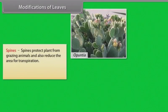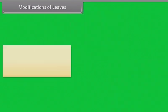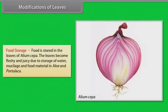Spines: spines protect plant from grazing animals and also reduce the area of transpiration. Examples: Opuntia, Aloe, Agave. Food storage: food is stored in the leaves of Allium cepa. The leaves become fleshy and juicy due to storage of water, mucilage and food material in Aloe and Portulaca.